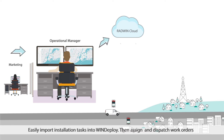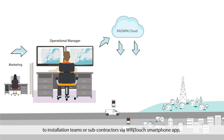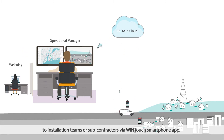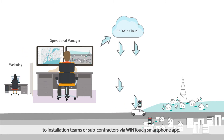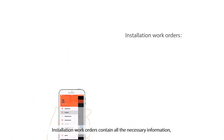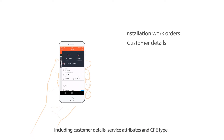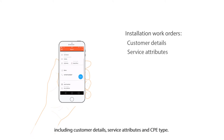then assign and dispatch work orders to installation teams or subcontractors via the WinTouch smartphone app. Installation work orders contain all the necessary information, including customer details, service attributes and CPE type.